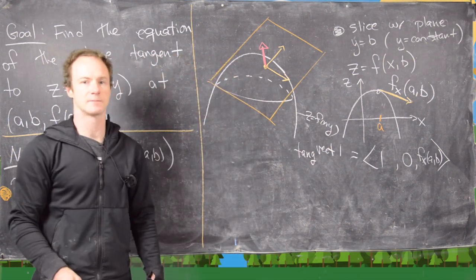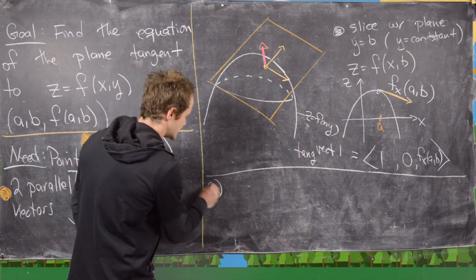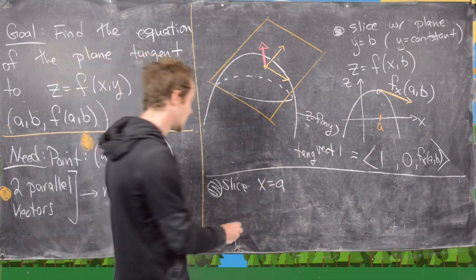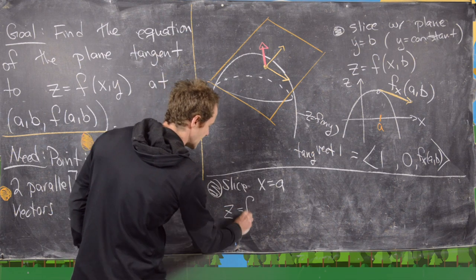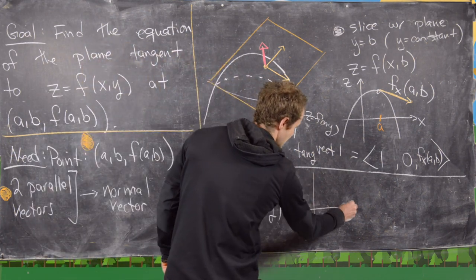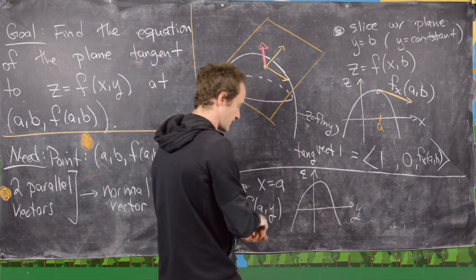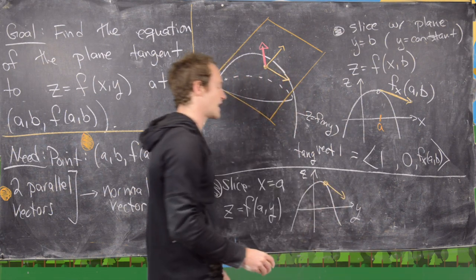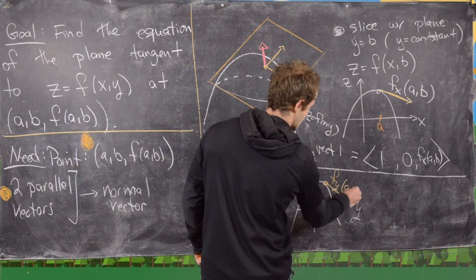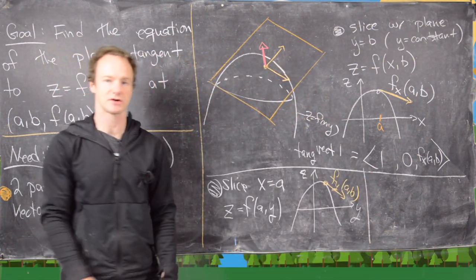Tangent vector number two we can get by doing a very similar thing. Now we're going to slice with a different plane — we'll slice with x equals a, which gives us a function of one variable: z equals f of a comma y, so our variable is y. That gives us a curve in the yz-plane, and the slope of the tangent to that curve is given by f sub y of a, b.